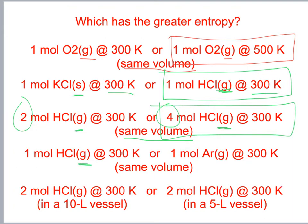A mole of HCl vs. a mole of argon at the same temperature and volume: HCl has greater entropy because it has more microstates — it has two atoms while argon only has one.